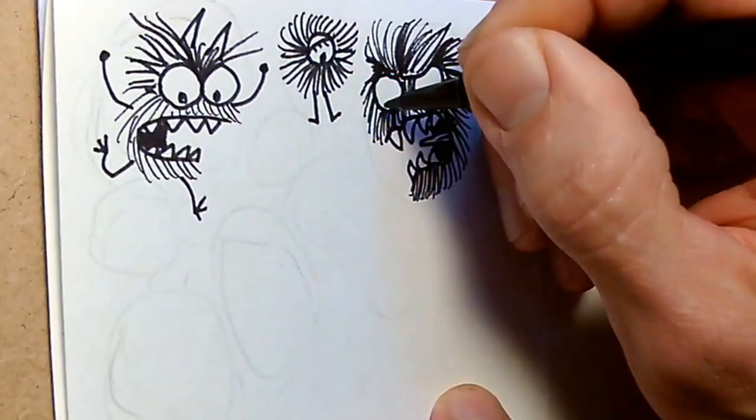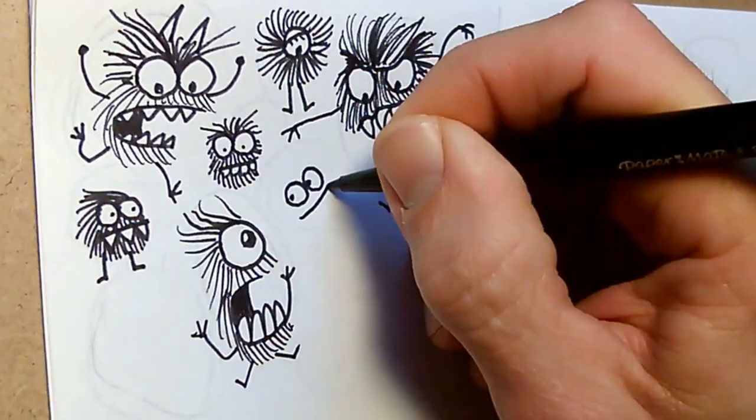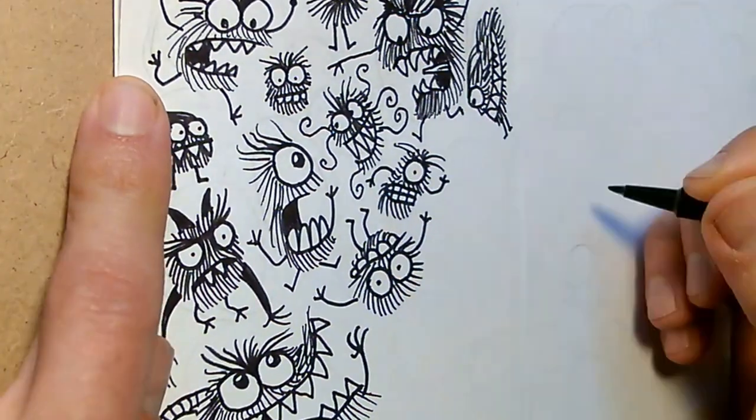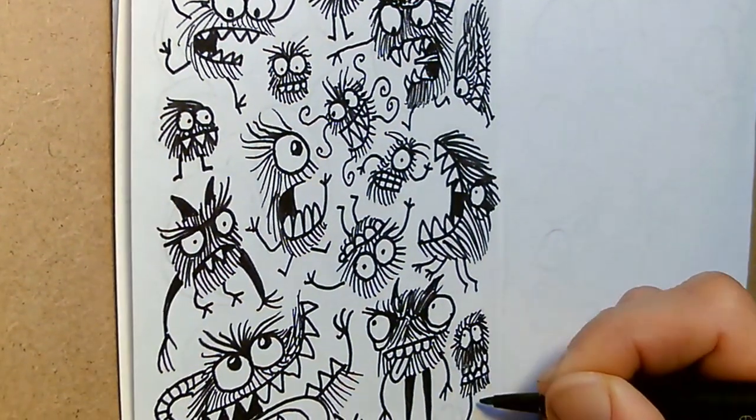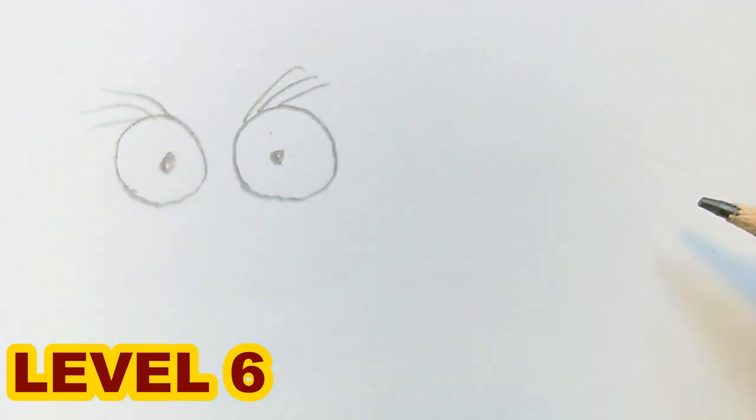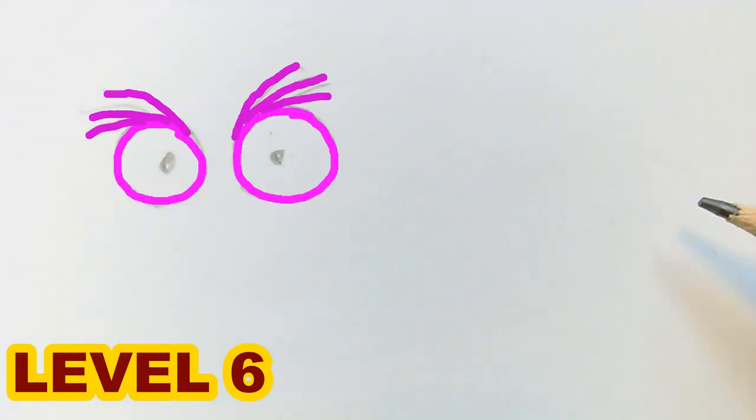Well, if you've been drawing daily monsters, you probably have a whole zoo of monsters levels one through five creeping and crawling around in your sketchbook. So today we're going to move on to level six. Heretofore, we've drawn all our eyes as circles with the eyebrows coming off of them, and that has a certain startled circle look to it.